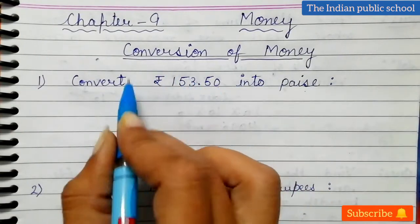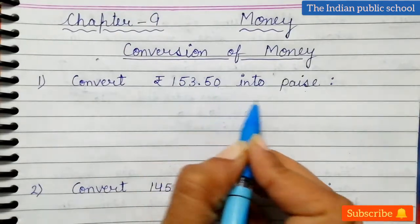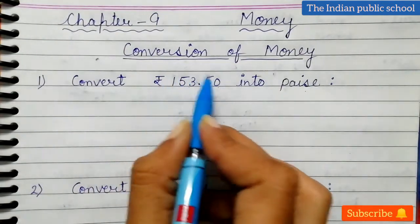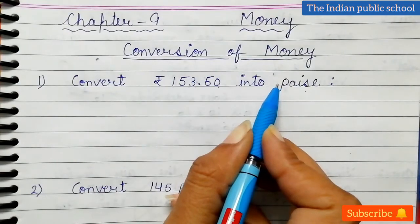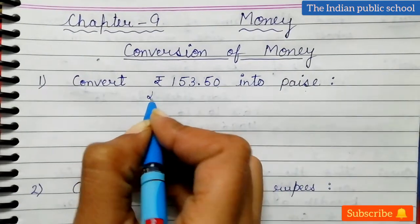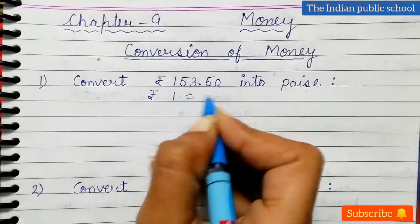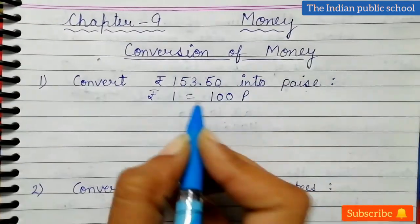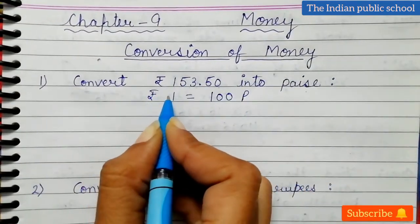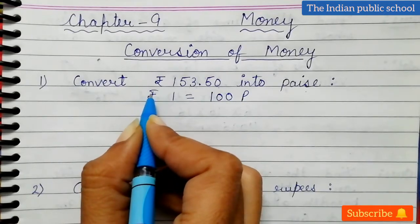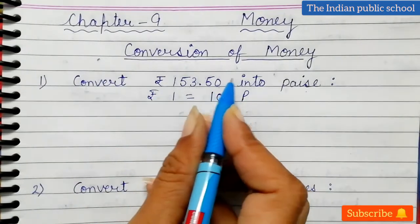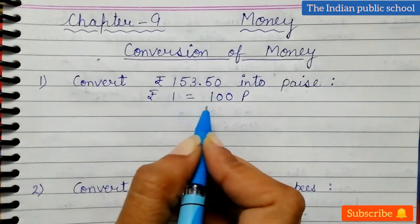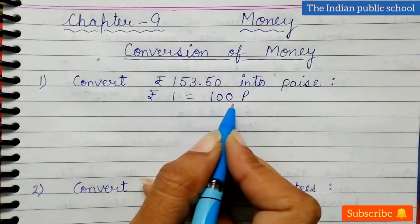But we need to convert the complete amount into paisa. We need to convert these rupees into paisa. You know rupees 1 is equal to 100 paisa. Rupees we will always write before the number and paisa we will always write after the number. So rupees 1 is equal to 100 paisa.